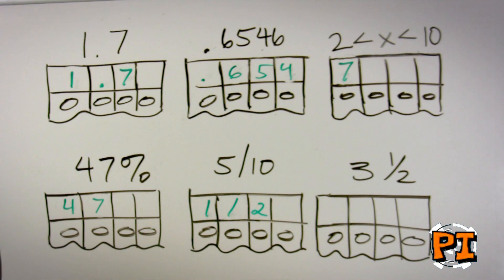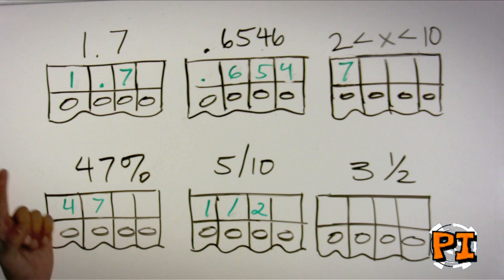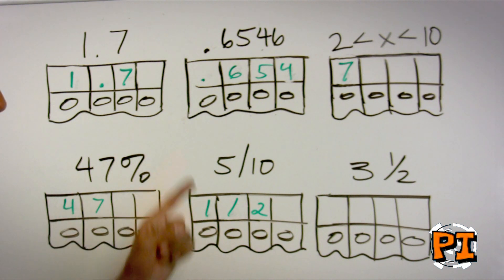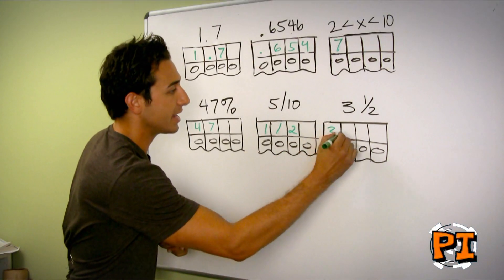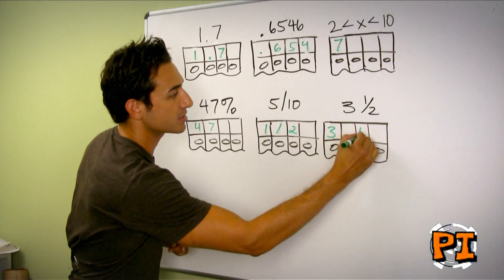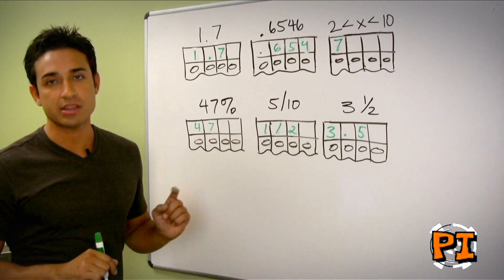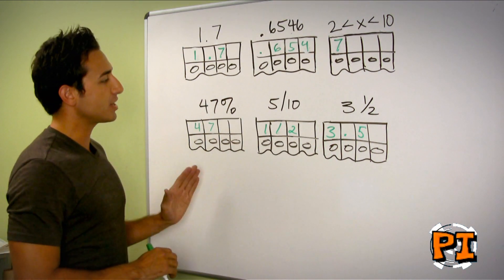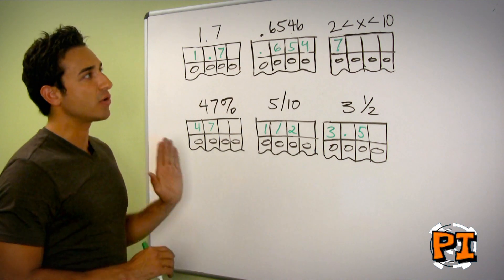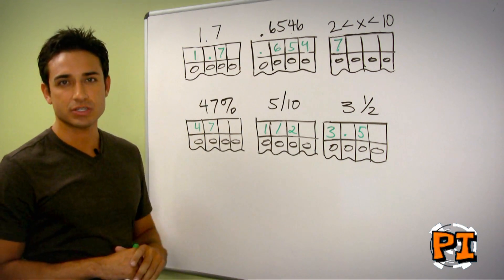If you have a mixed fraction as a response, you do not want to write 3 and 1 half, because it will be read as 31 over 2. You have to convert it into an improper fraction or write it as a decimal. In this case, it would be 7 halves or 3.5. Fraction or decimal — it doesn't make a difference. Start on the left-hand side, and make sure you don't get tripped up by the answers.